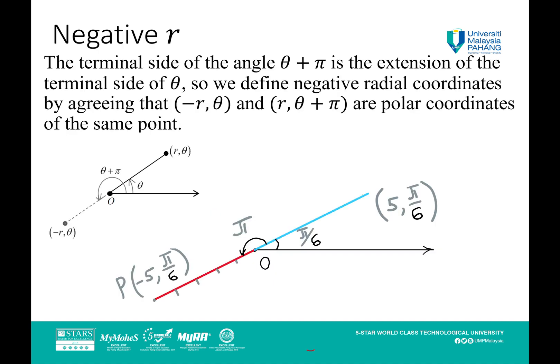How to define negative r? The terminal side of angle θ + π is the extension of the terminal side of θ. So we define negative radial coordinates by agreeing that (-r, θ) and (r, θ + π) are polar coordinates of the same point.